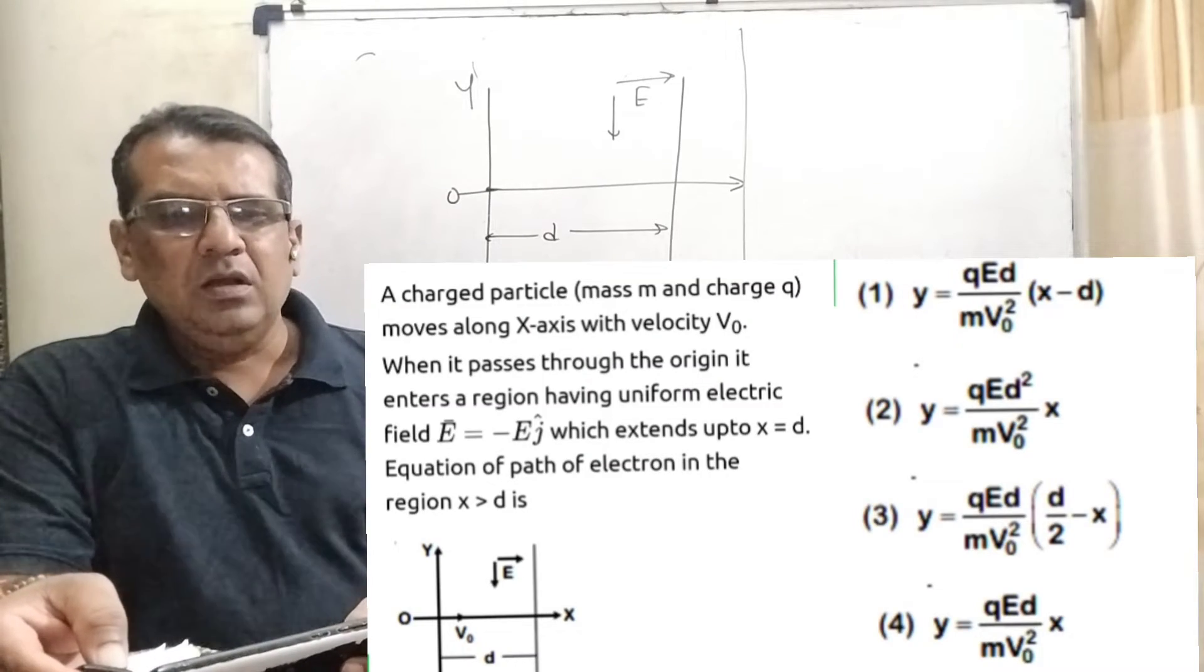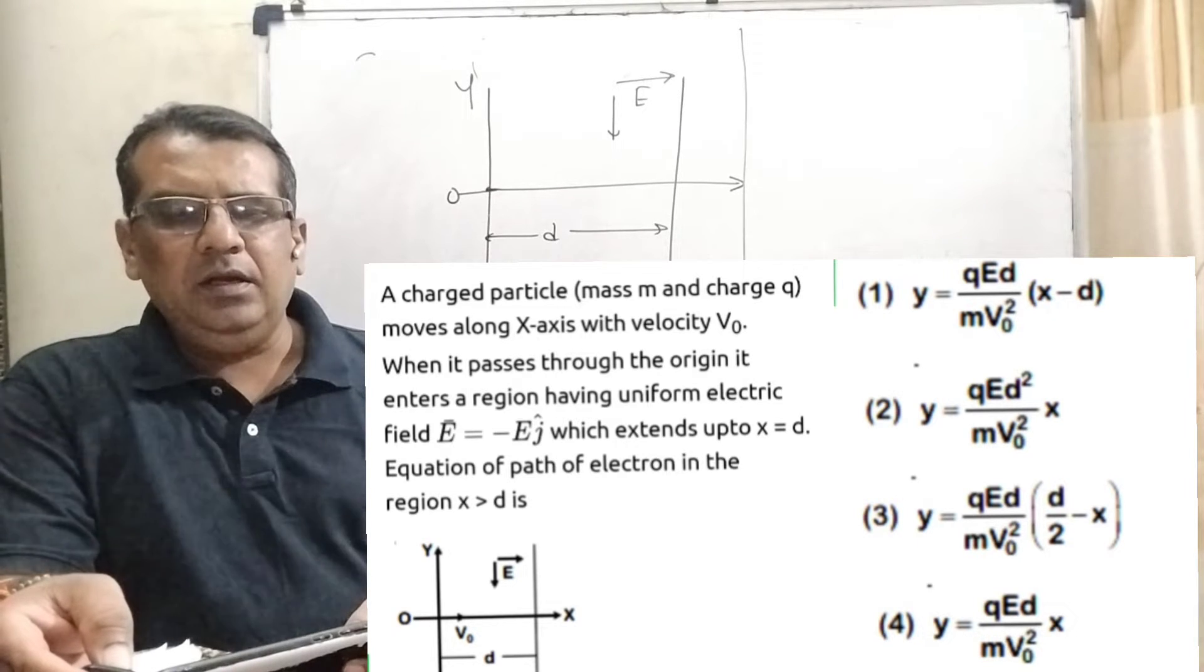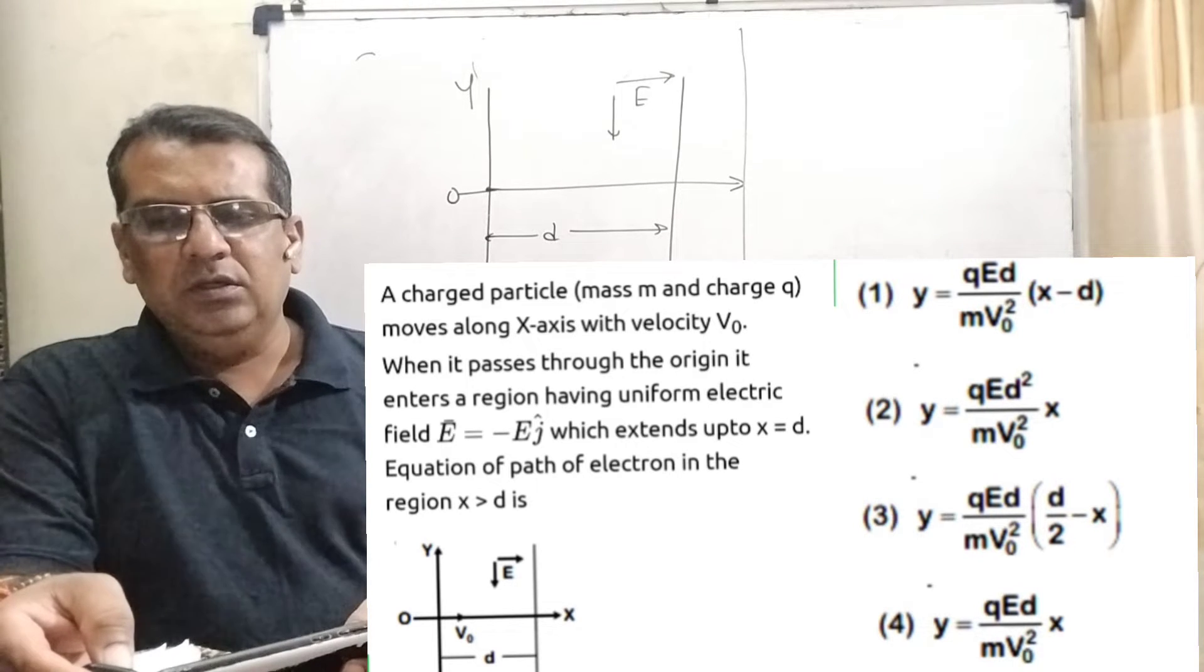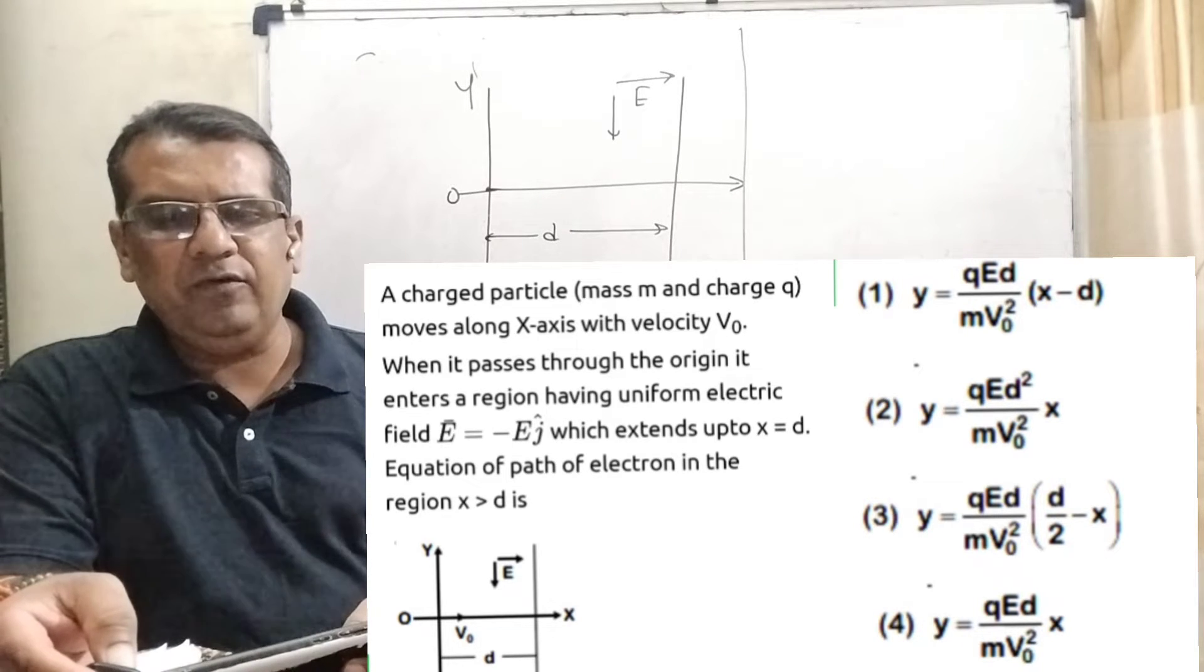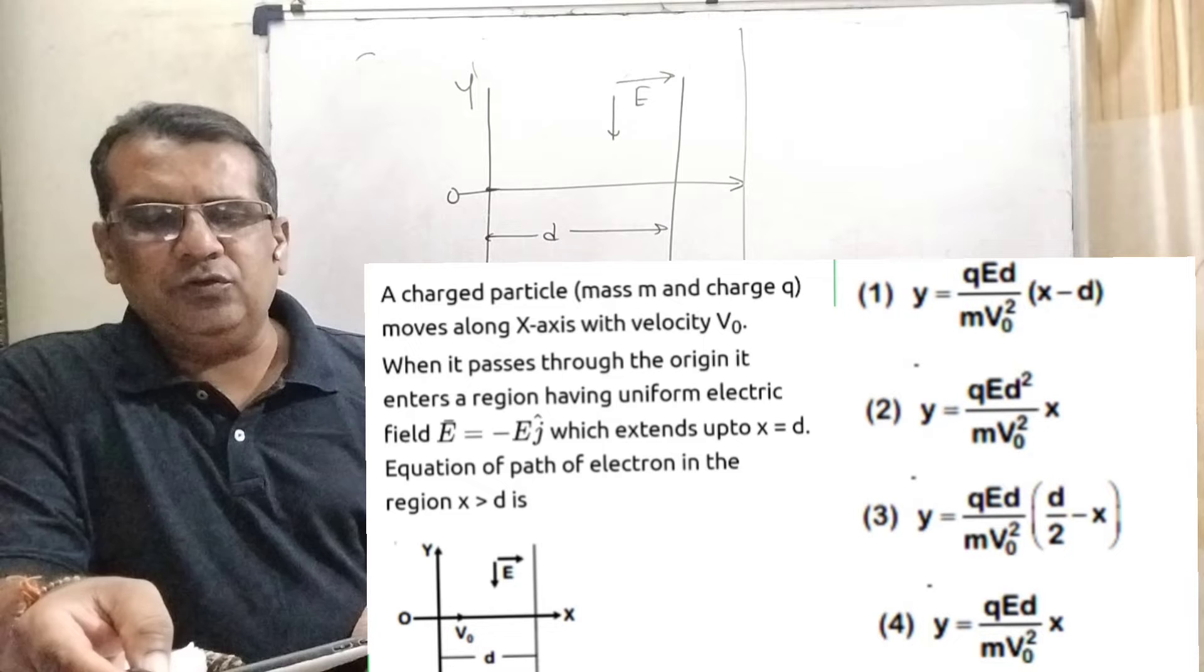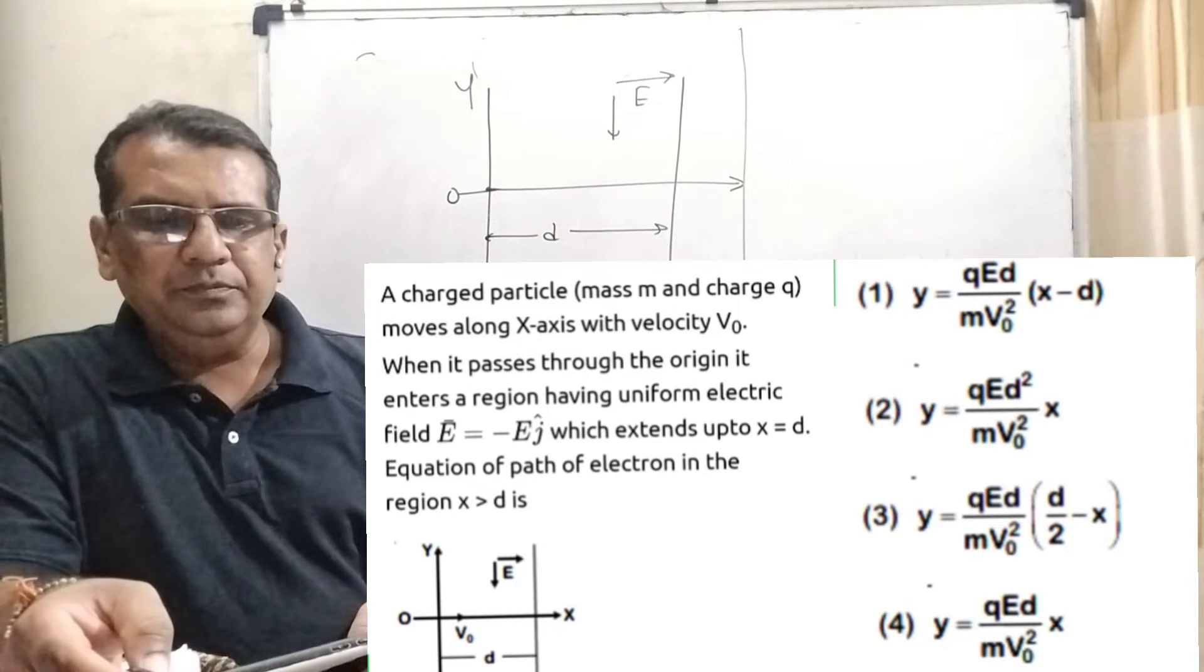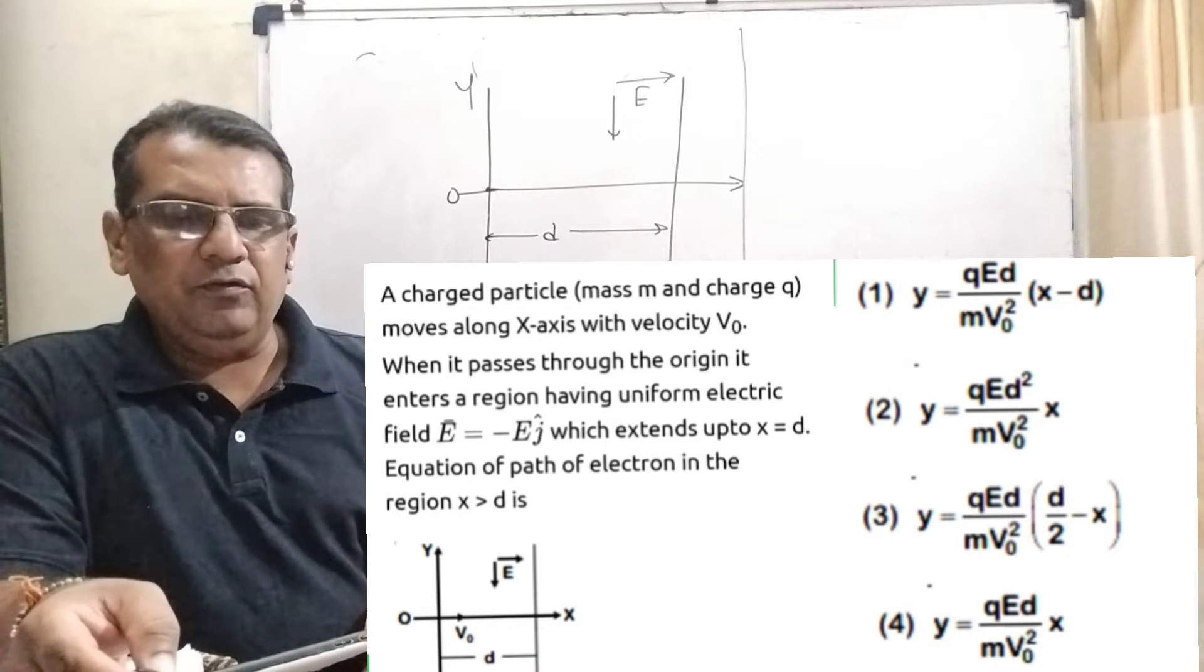Now here is the question. A charged particle, mass m and charge q, moves along the x-axis with velocity v0. When it passes through the origin, it enters a region having uniform electric field E vector equal to minus E j, which extends up to x equal to d. Equation of path of charge in the region x is greater than d is: